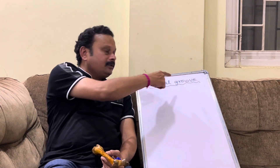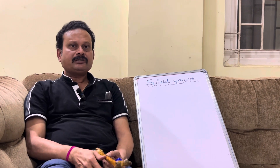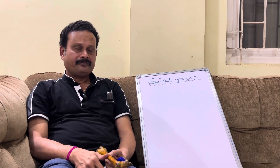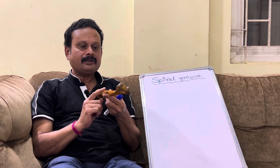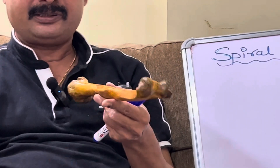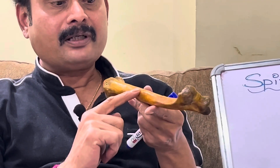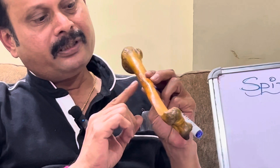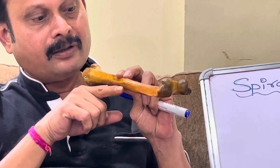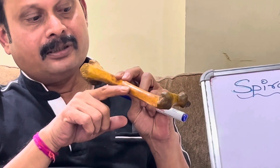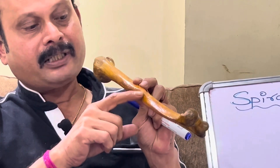Let us know about the spiral groove. This spiral groove is also called the radial groove. It is present on the bone humerus, along the middle of the lateral border, extending from the posterior surface, running downwards and laterally towards the lateral border.